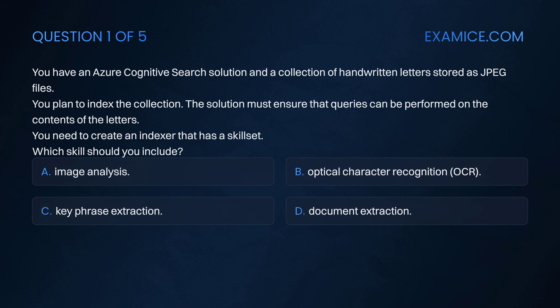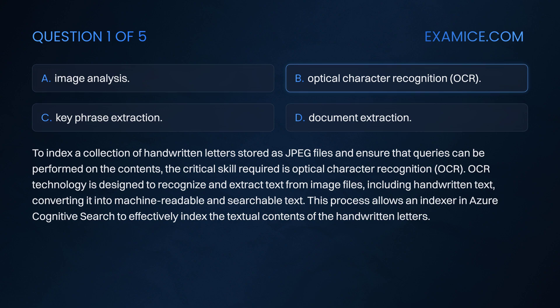To index a collection of handwritten letters stored as JPEG files and ensure that queries can be performed on the contents, the critical skill required is Optical Character Recognition. OCR technology is designed to recognize and extract text from image files, including handwritten text, converting it into machine-readable and searchable text. This process allows an indexer in Azure Cognitive Search to effectively index the textual contents of the handwritten letters.